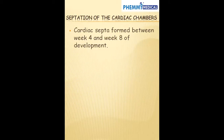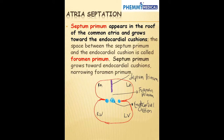Let's talk about the septation of the cardiac chambers. The cardiac septa form between week 4 and week 8 of development. We want to divide our atrium into two. We'll be talking about the atrial septation. We have our atria here and our goal is to divide the atria into two — to establish the right atrium and the left atrium by forming our atrial septum.